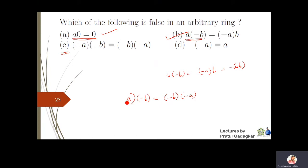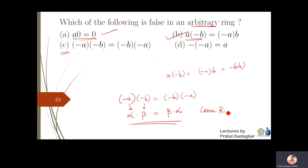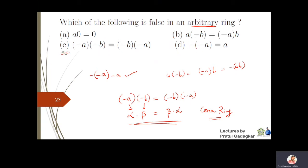If we replace −a by α and −b by β, this property says α·β = β·α for any arbitrary ring. This holds only if the ring is commutative. Since the ring is not given to be commutative, this property is false in a general ring. Part (d) — the additive inverse of a is −a, and its inverse is again a — is correct. So part (c) is false.